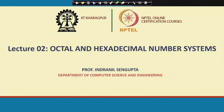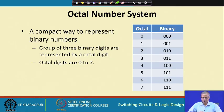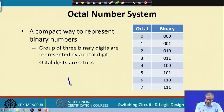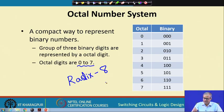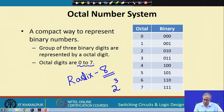Of course, octal and hexadecimal are separate number systems in their own right, but their main use is to represent binary numbers in a compact way. The octal number system — 'octal' means 8 — is a weighted number system with a radix of 8. Our radix is 8, which means our digits are 0 to 7. One important note: the radix 8 is a power of 2, and this is important.